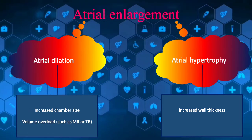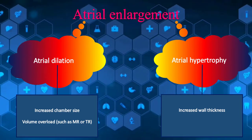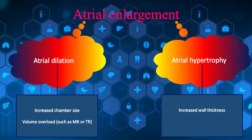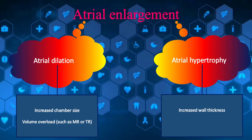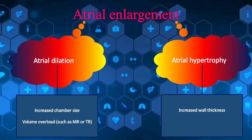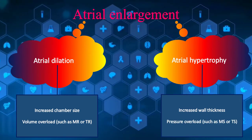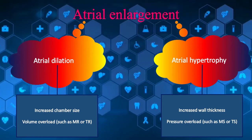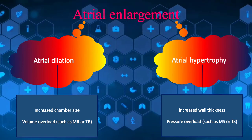Second, atrial dilation is due to an increase in volume overload. For example, mitral or tricuspid insufficiency are well-known causes of chronic volume overload that gradually lead to atrial dilation. Note that atrial hypertrophy is due to pressure overload. Mitral and tricuspid stenosis are common causes of high pressure in the left and right atrium respectively.